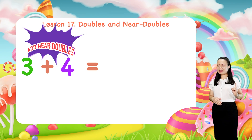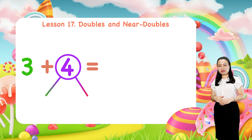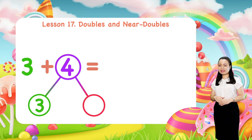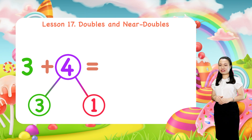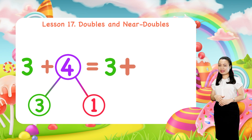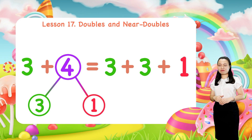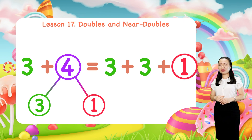Observe that 4 is equal to 3 plus 1. This is equivalent to 3 plus 3 plus 1. As you can see, this sum is 1 more than the doubles.